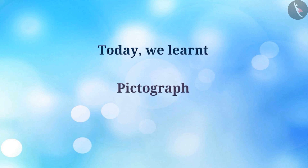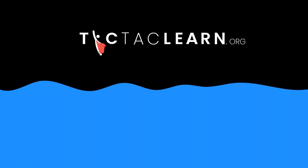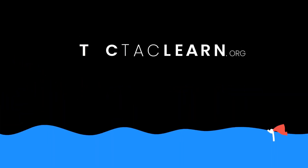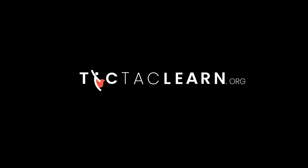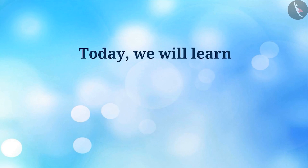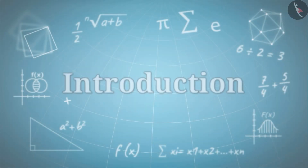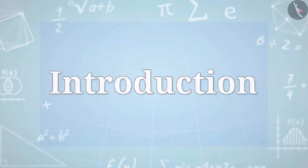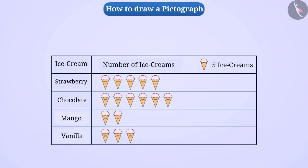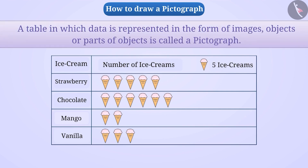Today we learnt what a pictograph is. In the next video, we will understand how to draw them. A table in which data is represented in the form of images, objects, or parts of objects is called a pictograph.